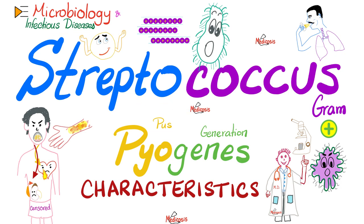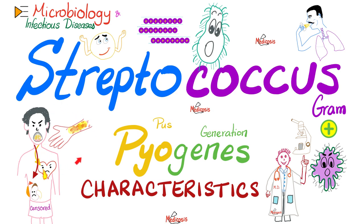We talked about staph aureus before. In the last video, we talked about the classification of streptococci. Today, we'll talk about the characteristics of Streptococcus pyogenes, also known as group A beta-hemolytic streptococcus. Why do you call it pyogenes? Because it causes genesis of pus — it induces your neutrophils, pus cells, to make pus.